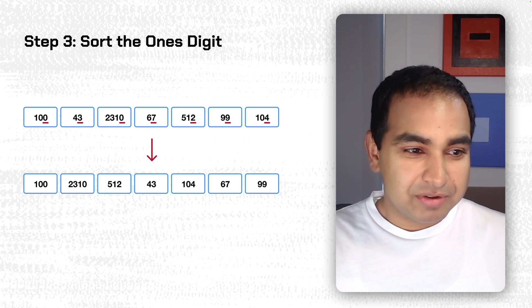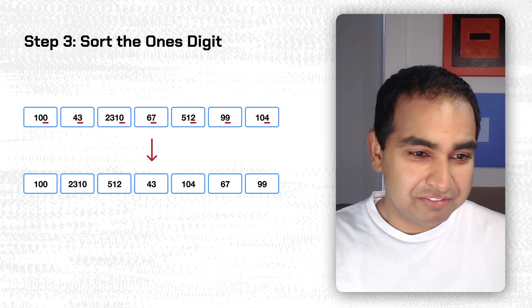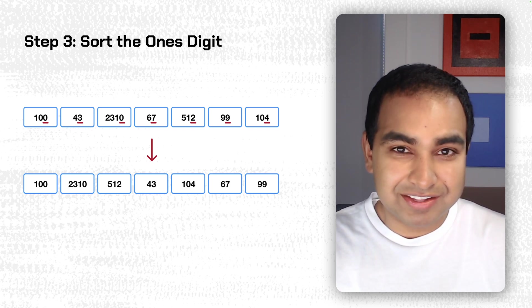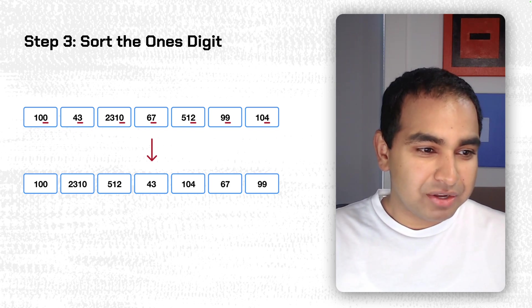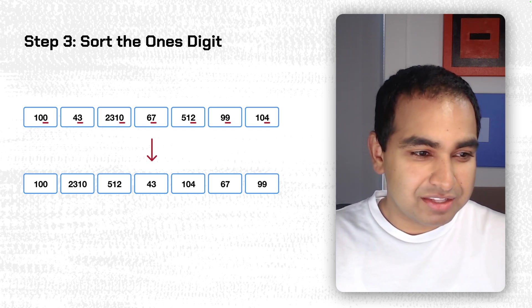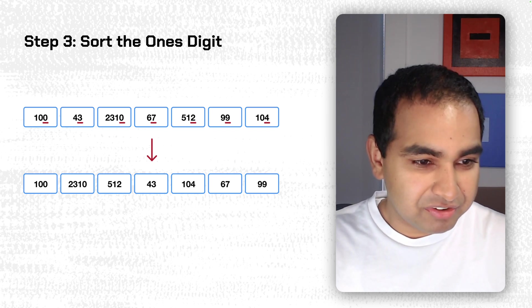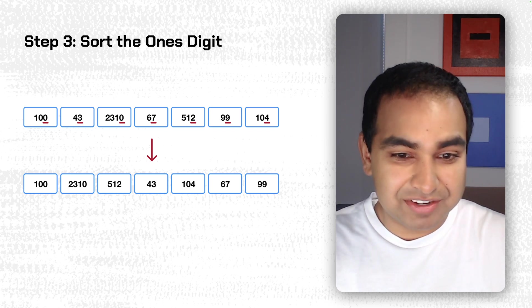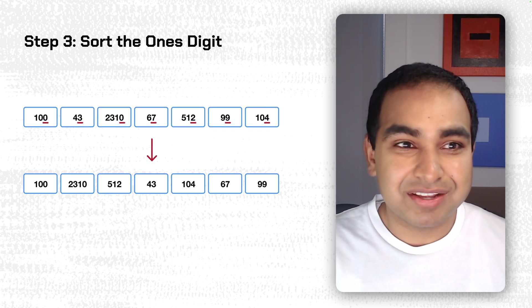We are sorting the array on the 1s digit, and now the output is 100, 2310, 512, 43, 104, 67, and 99. And if we ignore all the numbers and only look at the rightmost digit, you'll see that the sorted array is correct. You have 0, 0, 2, 3, 4, 7, and 9. That seems pretty sorted to me.